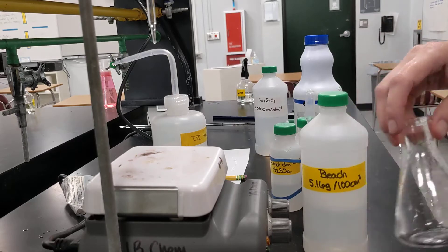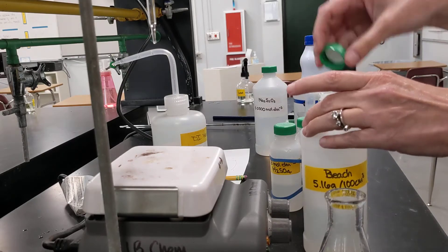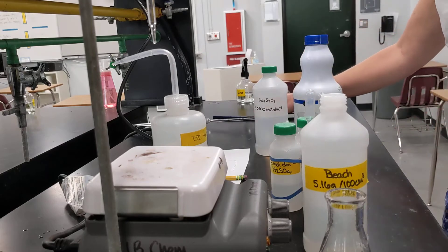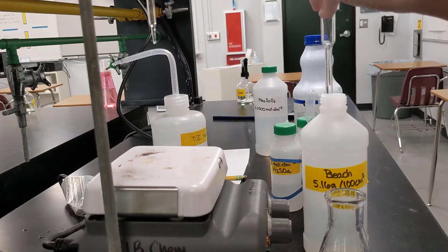So I am going to, into my conical flask, pipette 10 cubic centimeters of this bleach solution with a volumetric pipette.